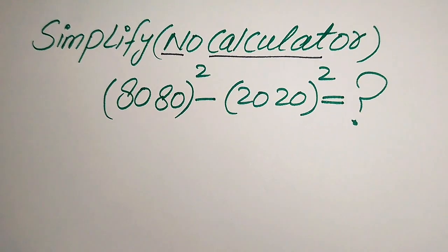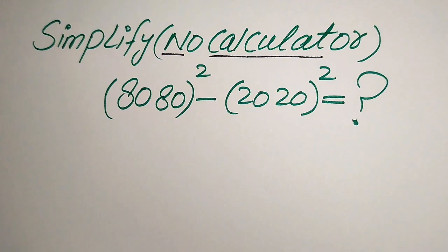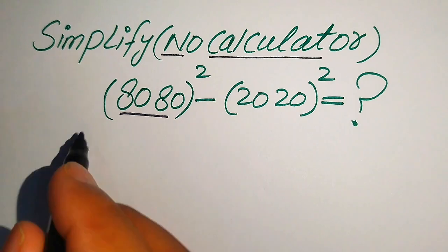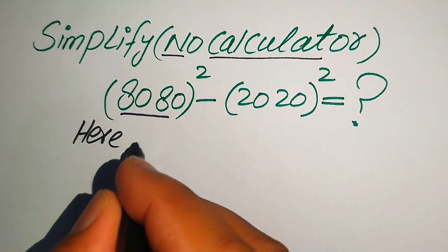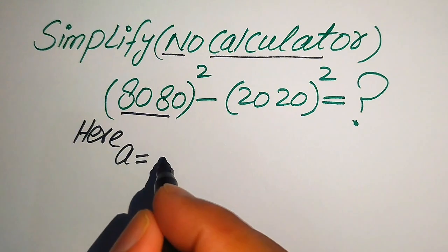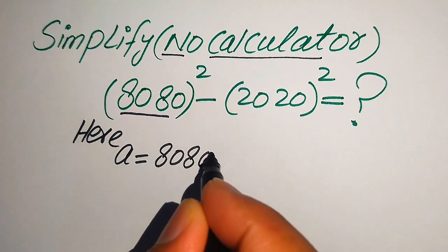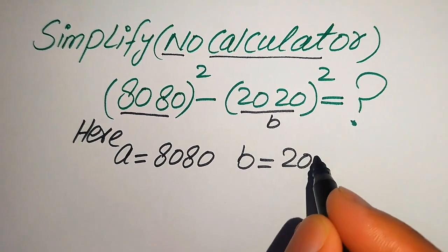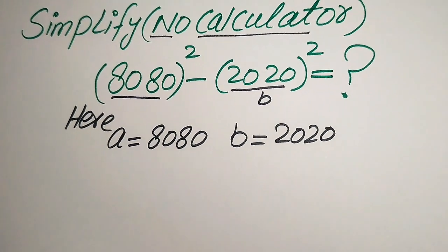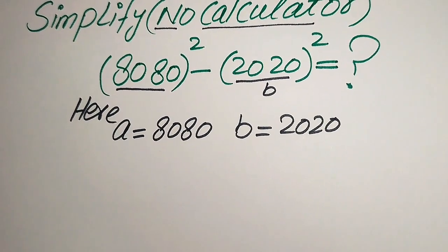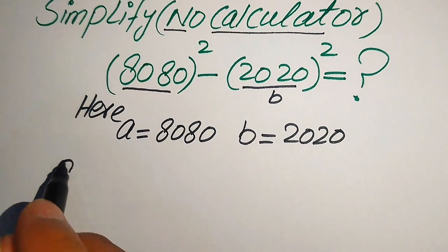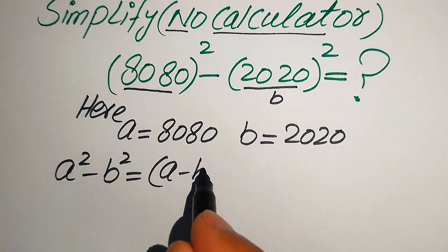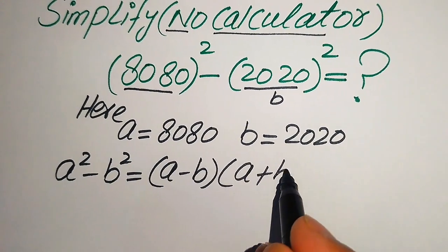I hope you like this method, but if you have another method in mind, please don't hesitate to write it in the comment section. Now, first focus on the base of each term. We take the base of the first term as a, where a equals 8080, and the base of the second term as b, where b equals 2020. We apply the algebraic formula: a squared minus b squared equals a minus b times a plus b.